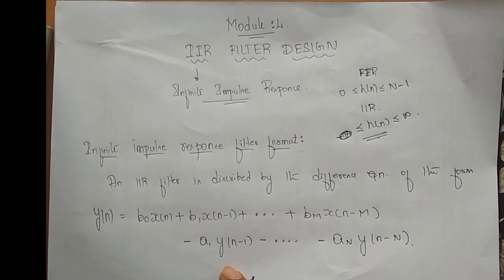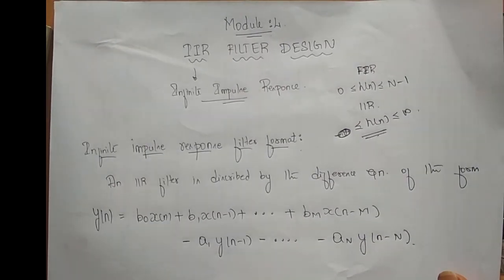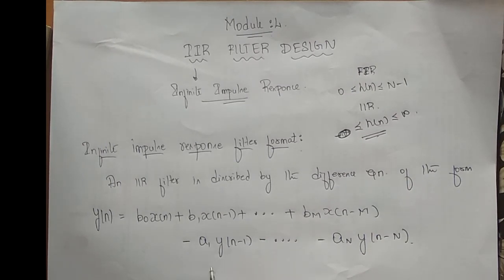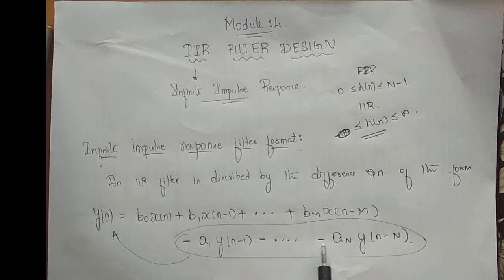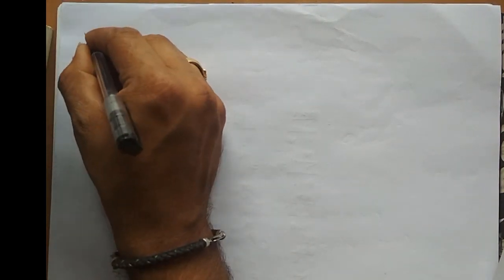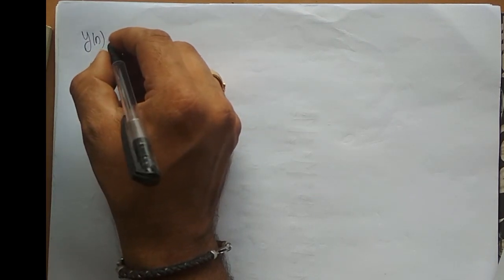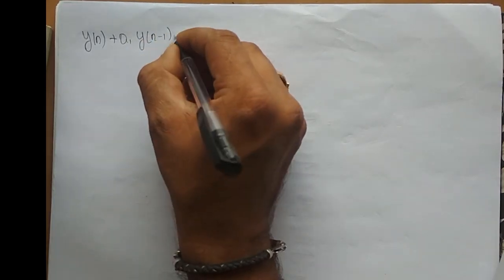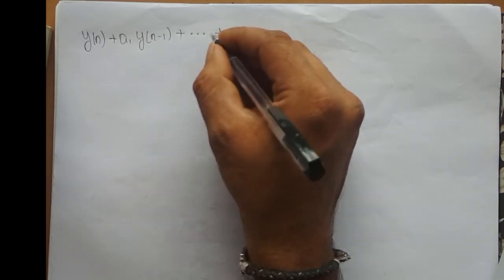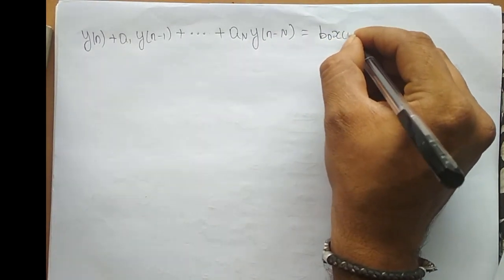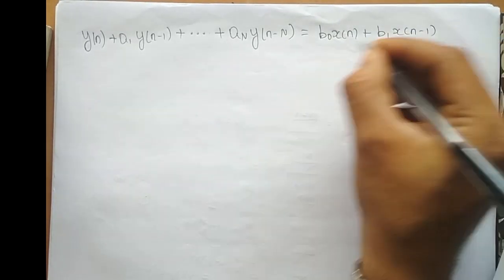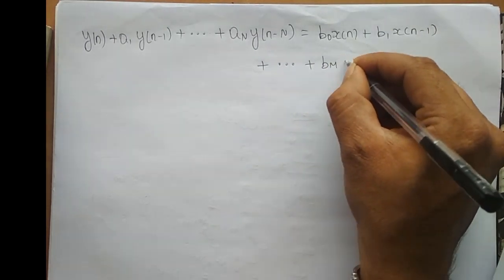What we do is slightly modify this equation and convert the difference equation into a system function. I will take the feedback terms to the left-hand side. So we get: Y(n) + A1·Y(n−1) + ··· + AN·Y(n−N) = B0·X(n) + B1·X(n−1) + ··· + Bm·X(n−m).